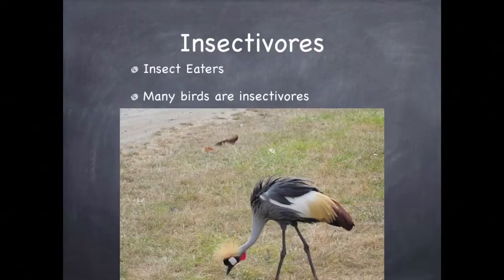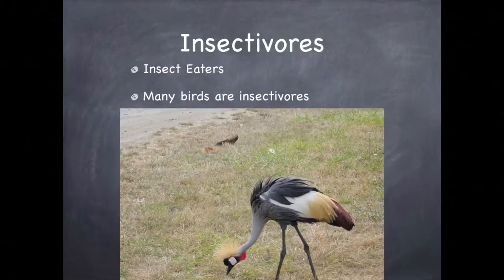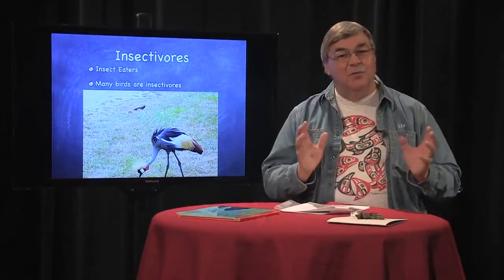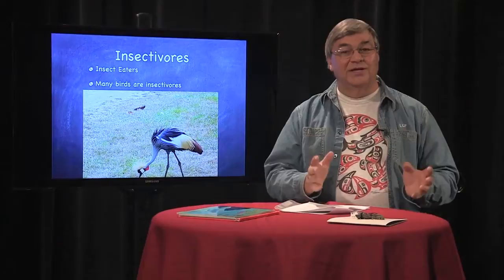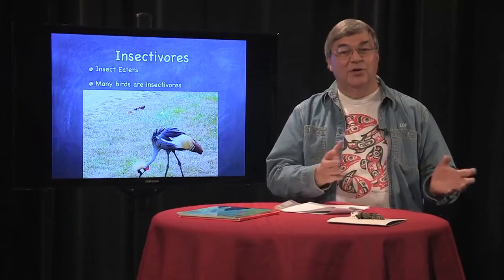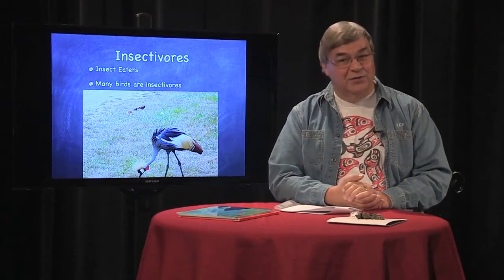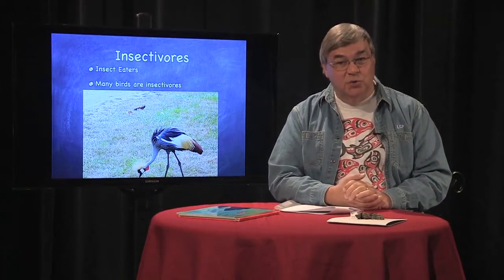Some animals eat only certain other animals — those are carnivores, yes — but the animal that only eats insects is called an insectivore. Those are mostly birds. So there are some words you can use to report on the diet of the animal you're researching. In fact, you've likely encountered these words in your source material.